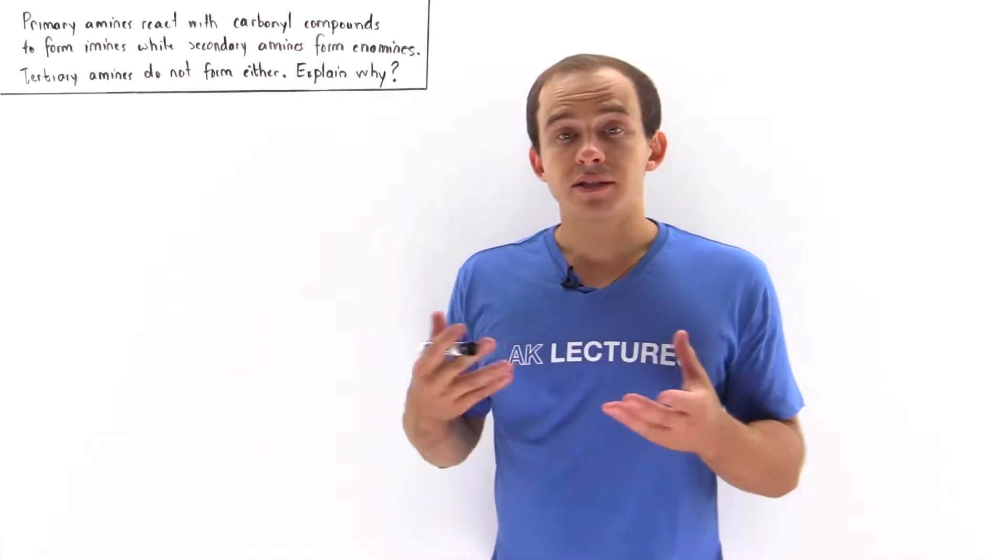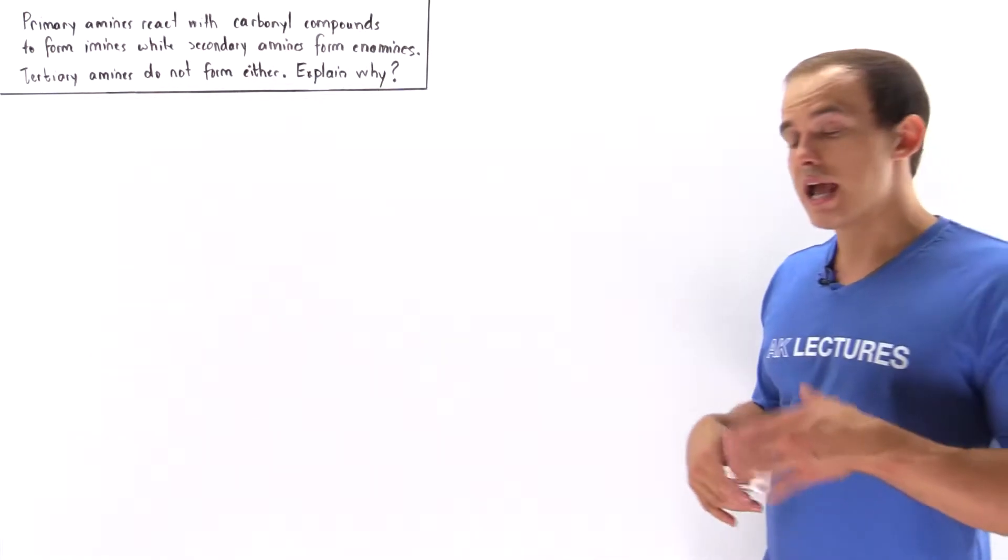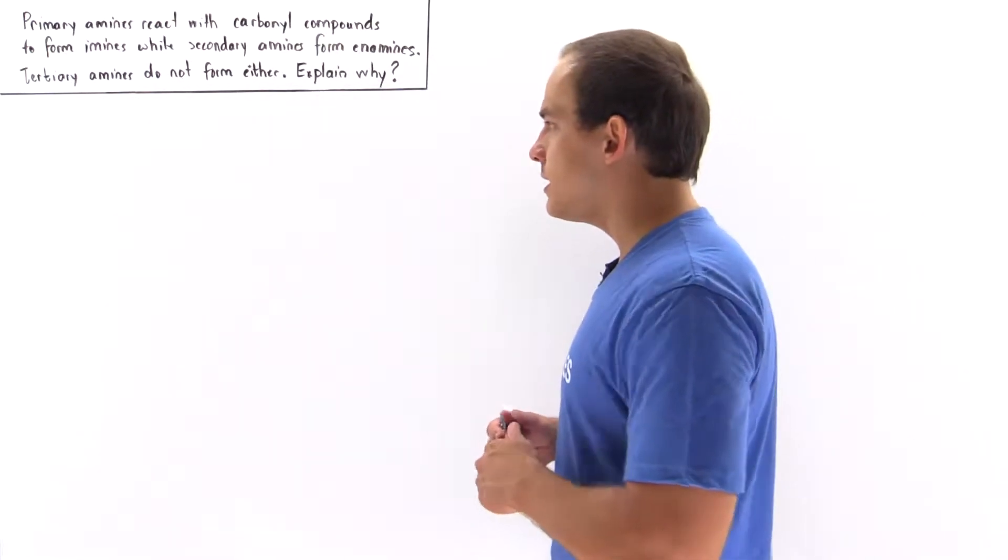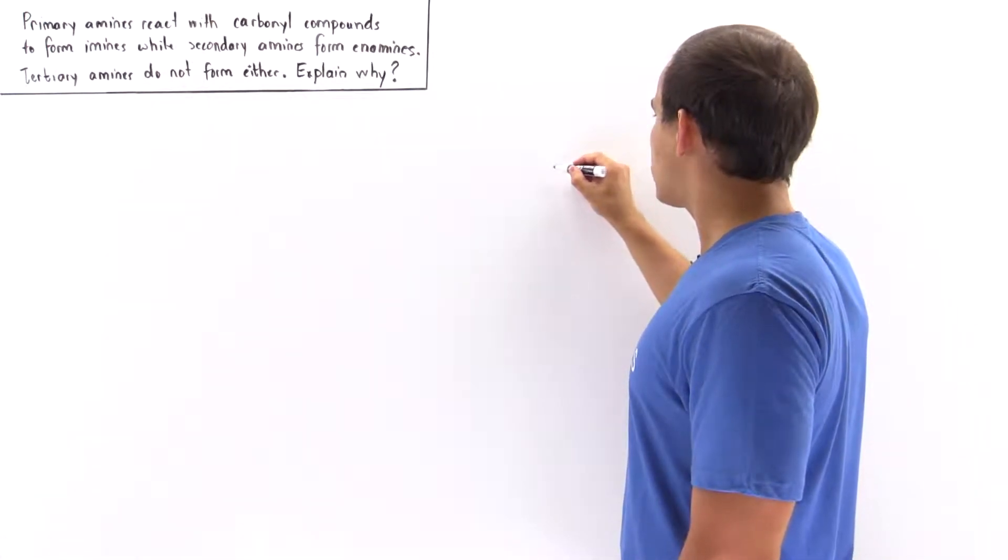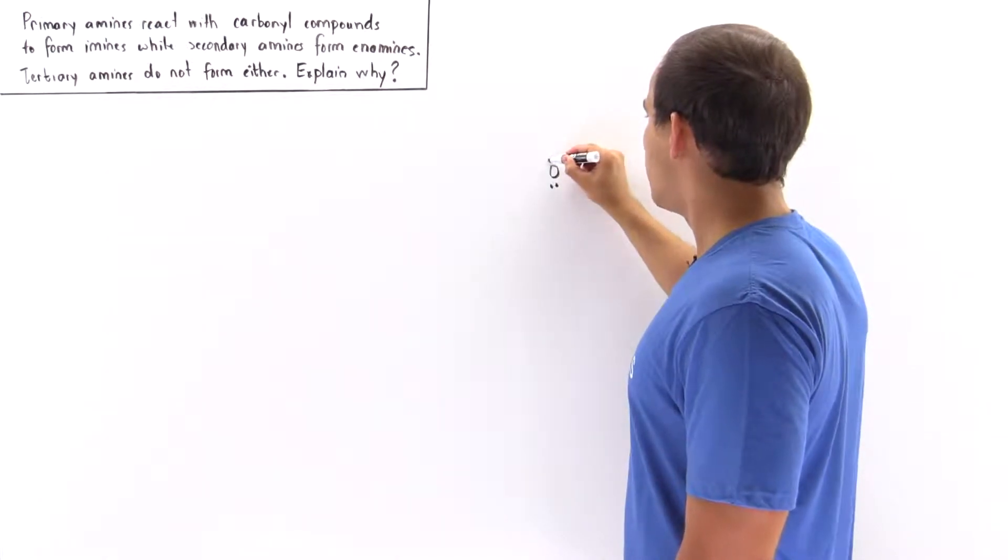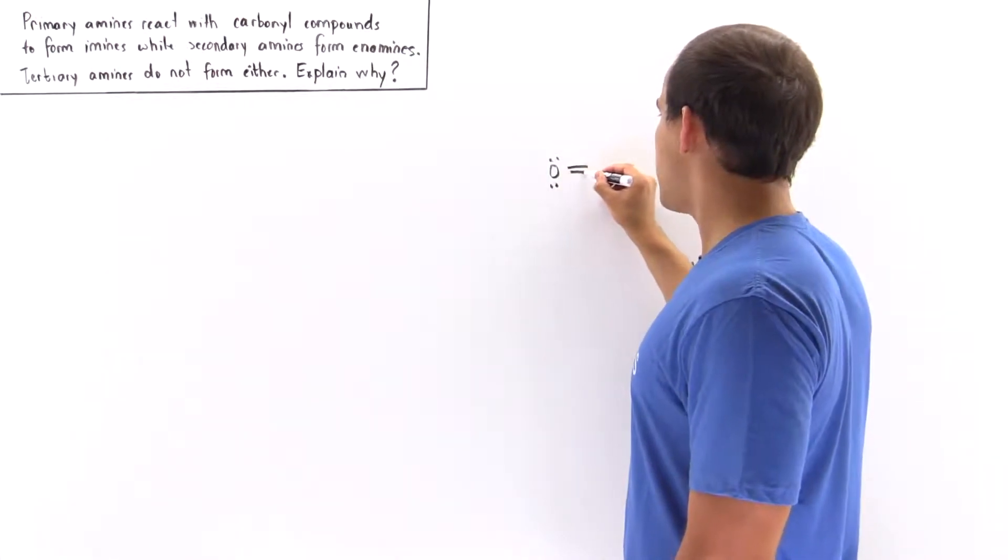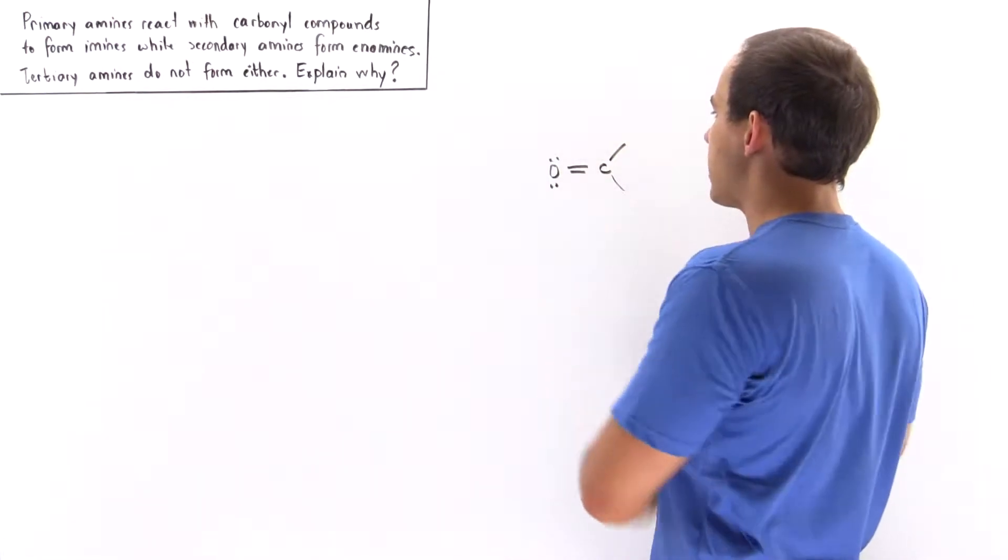To answer this question, let's examine the reaction mechanism between a tertiary amine and a carbonyl. So let's suppose we choose the ketone to be our carbonyl. The ketone basically has a double bond between the oxygen and our carbon, and the carbon is attached to two methyl groups.